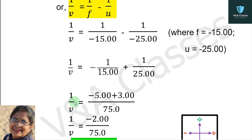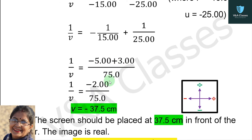When we substitute the values: 1 by v equals to minus 5 plus 3 upon 75. Solving this, 1 by v equals to minus 2 upon 75. The minus 2 comes from minus 5 plus 3, so we subtract and take the sign of the greater number. Therefore, 1 by v equals to minus 2 upon 75.